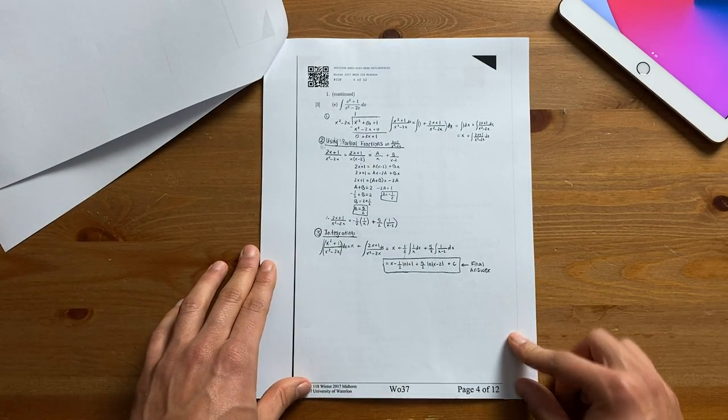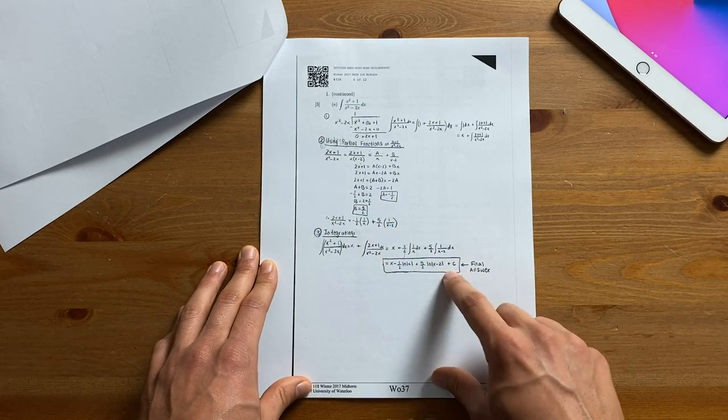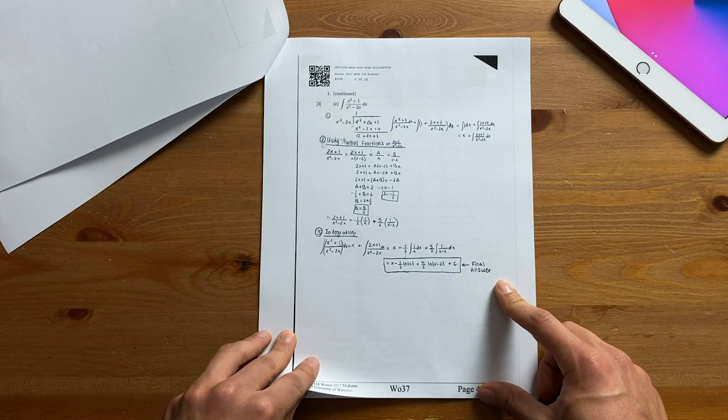And in engineering we live off part marks. Again moving on to part 1E you'll notice I always label my steps, have a little explanation of what I'm doing, and box my final answer. Sometimes if I'm in a rush I won't do that but this was the first question so I had enough time to do that.